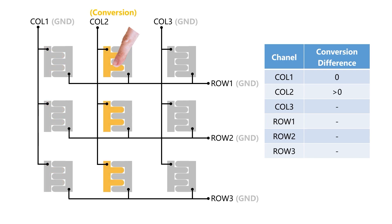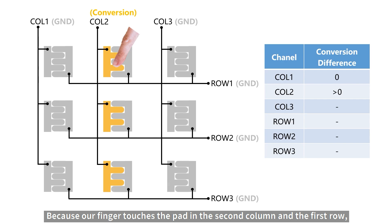Next, set the channel connected in the second column to the touch conversion function. Because our finger touched the pad in the second column in the first row, the total capacitance of the pad increases. Therefore, when the touch conversion is performed in the second column, the difference obtained will be greater than 0. However, at this time, the channel is connected to three pads, and it is not certain which pad the finger touches.